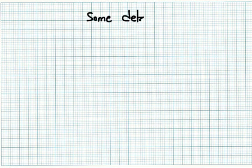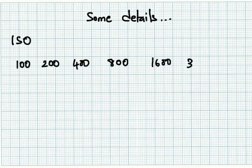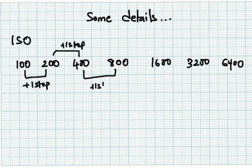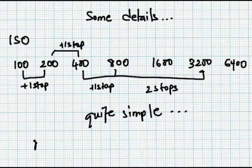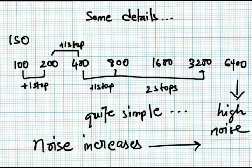Let's go to some details now. ISO, which is sensor sensitivity, is expressed as a number usually starting from 100. Every stop increase in ISO is equivalent to doubling of ISO number. So 100 to 200 is one stop. 200 to 400 is another stop. 800 to 3200 is two stops. The important thing to remember is high ISO means high noise.